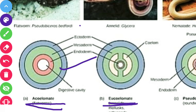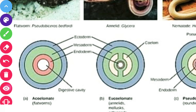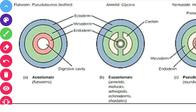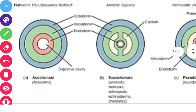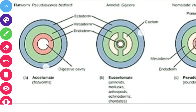True coelomates have a cavity formed by the mesoderm layer, inside which organs are kept, lined by the peritoneum layer. Annelida, Mollusca, Arthropoda, Echinodermata, and all chordates are true coelomates, whereas flatworms are acoelomates, as I have already explained.